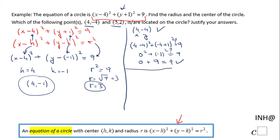And we're going to check now the second point which is 5 and 2 and we're going to use the same technique. This is x, this is y and we're going to plug it in the original equation. So I'm going to have 5 minus 4 to the second power plus 2 plus 1 to the second power equals 9.